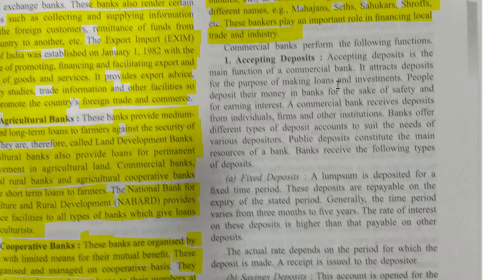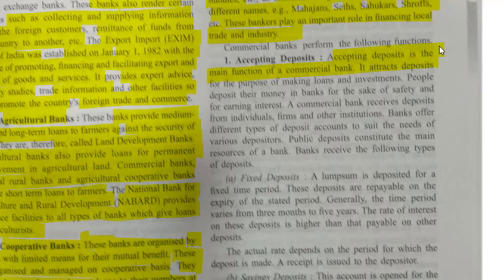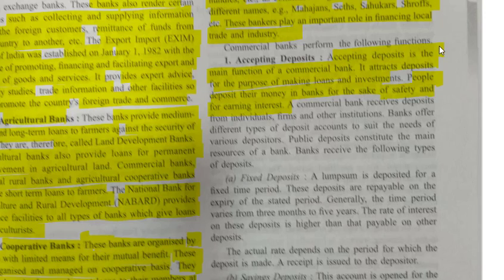The first function is accepting deposits. Accepting deposit is the main function of a commercial bank. Banks attract deposits for the purpose of making loans and investments. People deposit their money in the bank for the sake of safety and for earning interest. A commercial bank receives deposits from individuals, firms, and other institutions. Banks offer different types of deposit accounts to suit the needs of various depositors. Public deposits constitute the main resource of the bank.